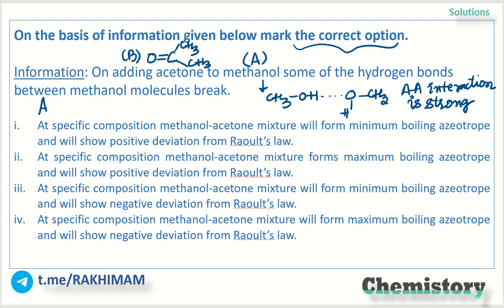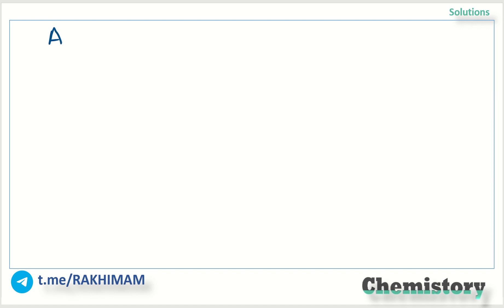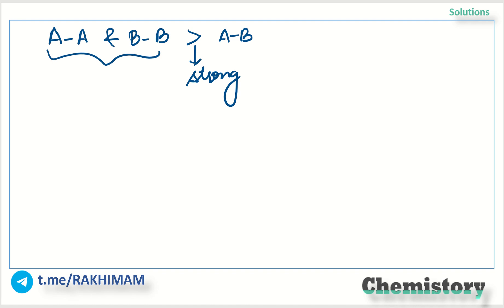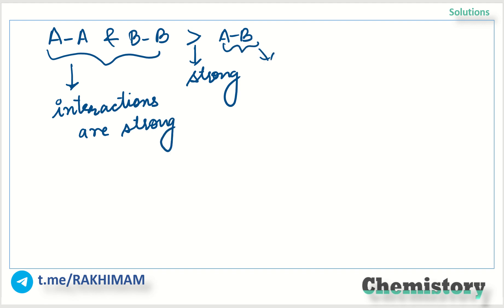This means that AB interaction is weak. AA interaction is strong in comparison to AB interaction. These AA and BB interactions are strong, but AB interaction is weak. If the AB interaction is weak, that means what?